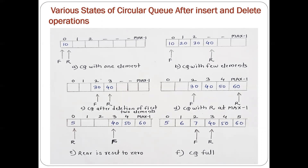Here I have shown the various states after insertion and deletion of some elements into the circular queue. Initially only one element is present in the queue, that's why the front and rear both are at the same position. This is the case of the circular queue with one element. In the second case I have inserted few elements into the queue — front is again at the zero position but the rear is at the fourth position.